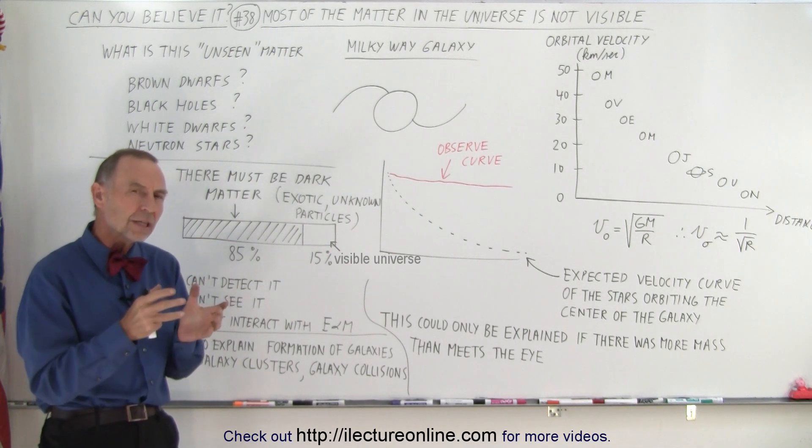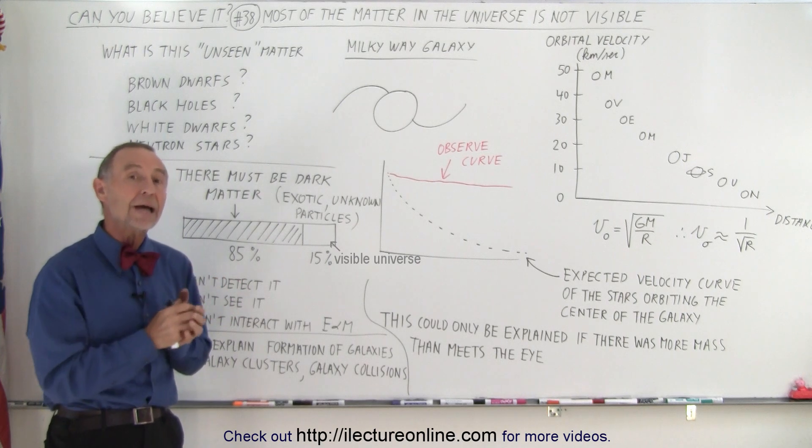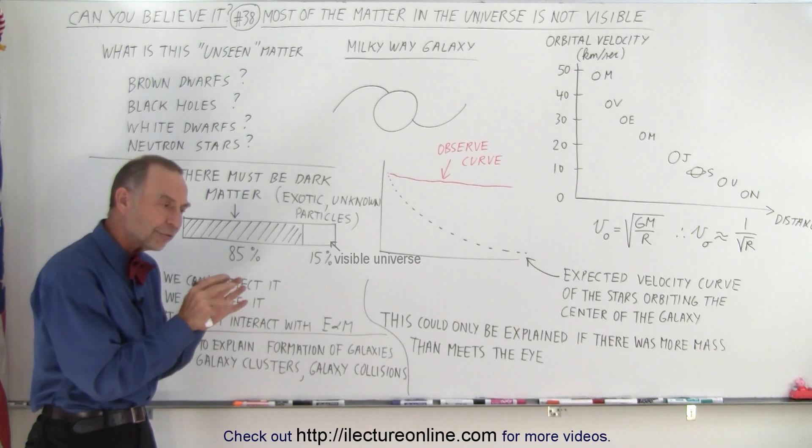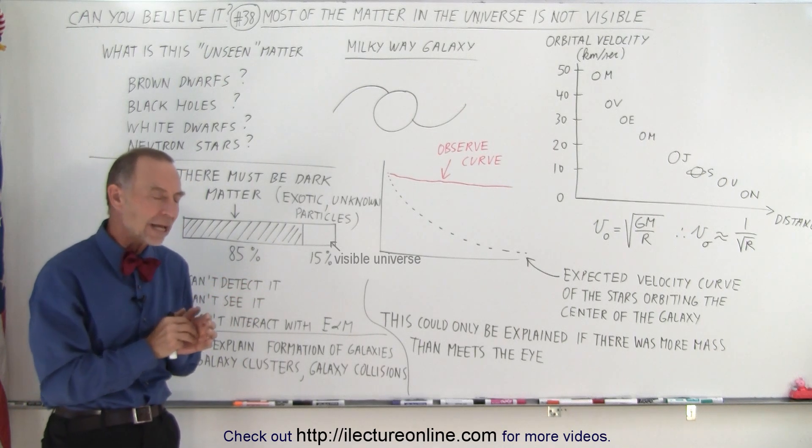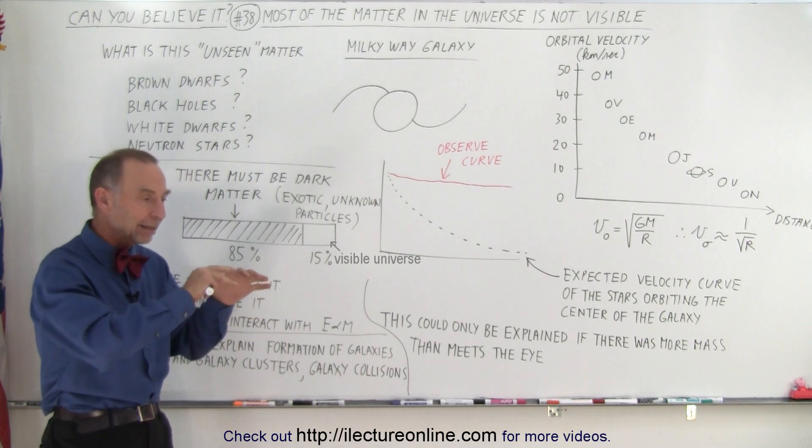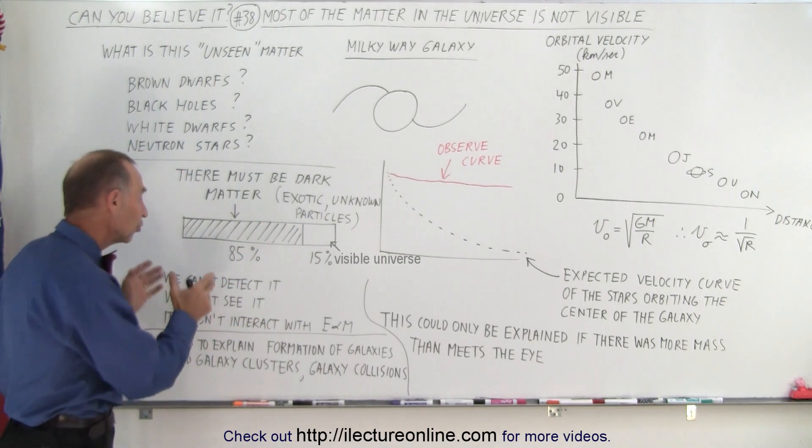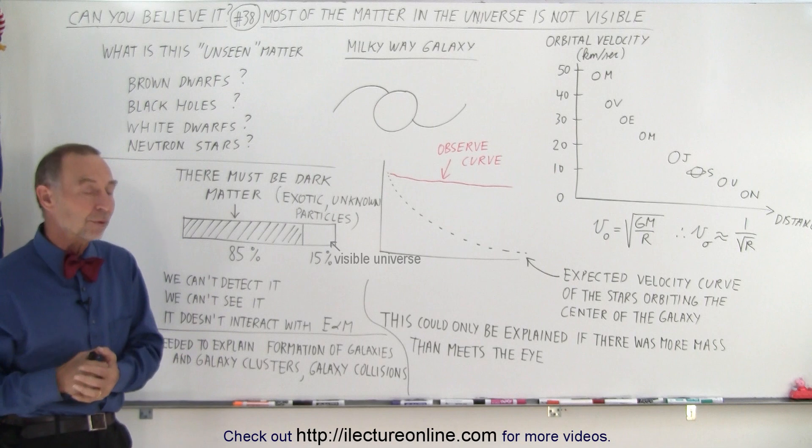Also when we study the cosmic microwave background radiation that we receive from all over, again, it shows the fluctuations in that radiation that would indicate that the variation in the density of the universe matches that when we assume that dark matter was there.